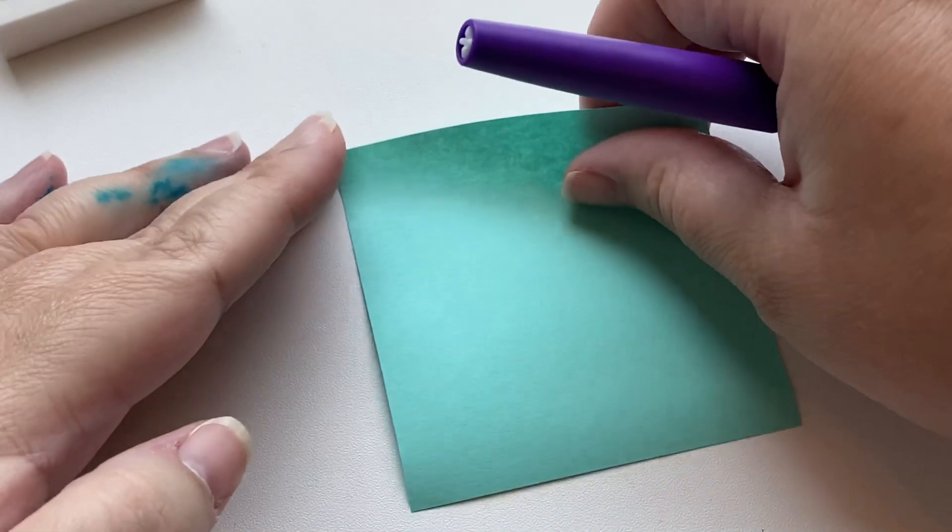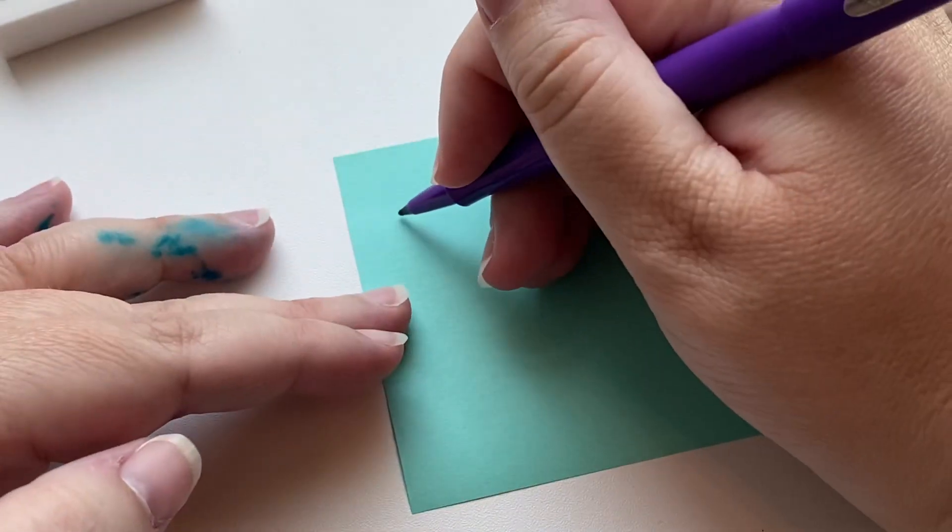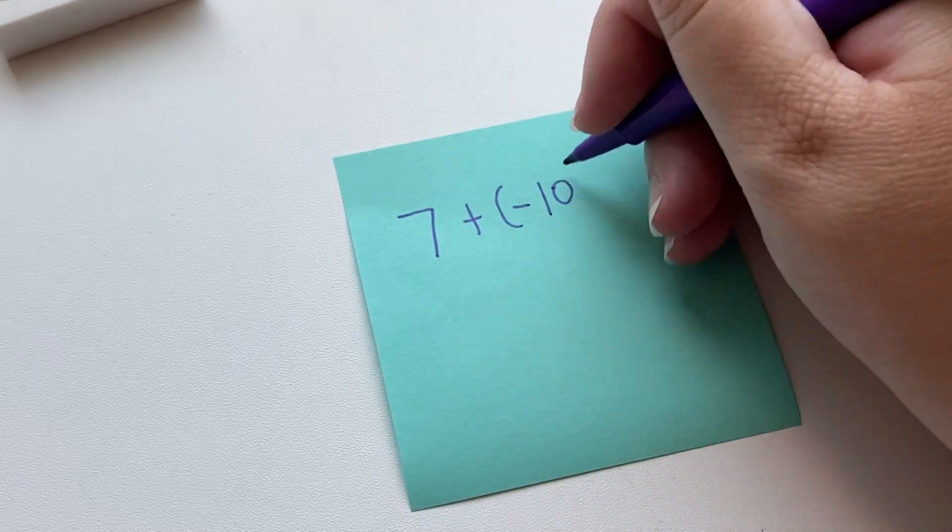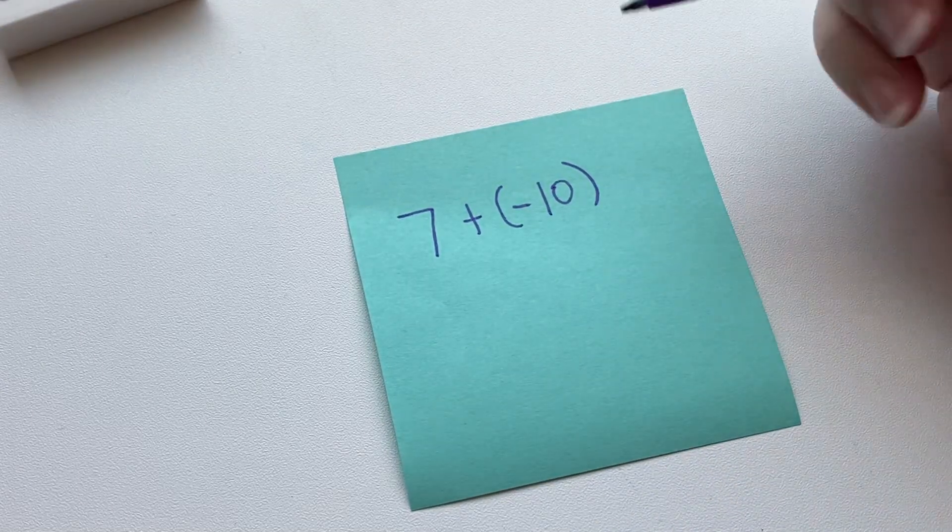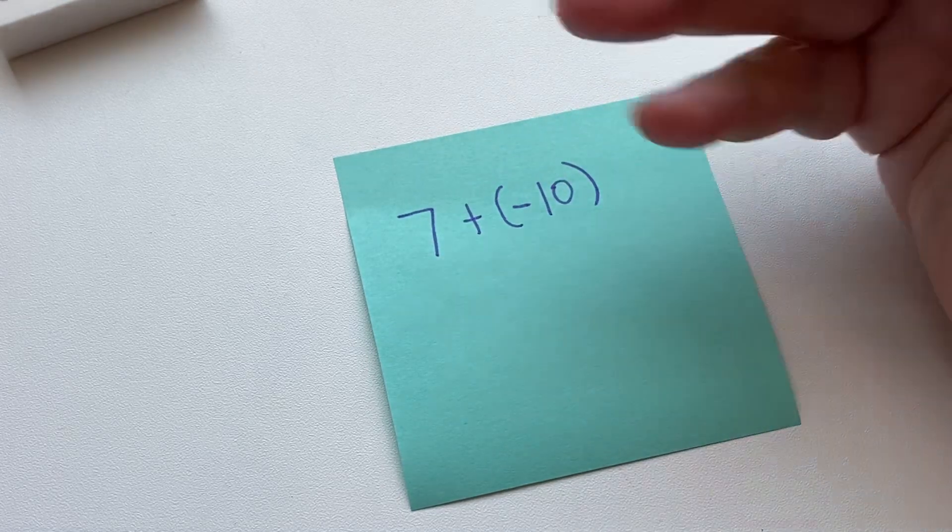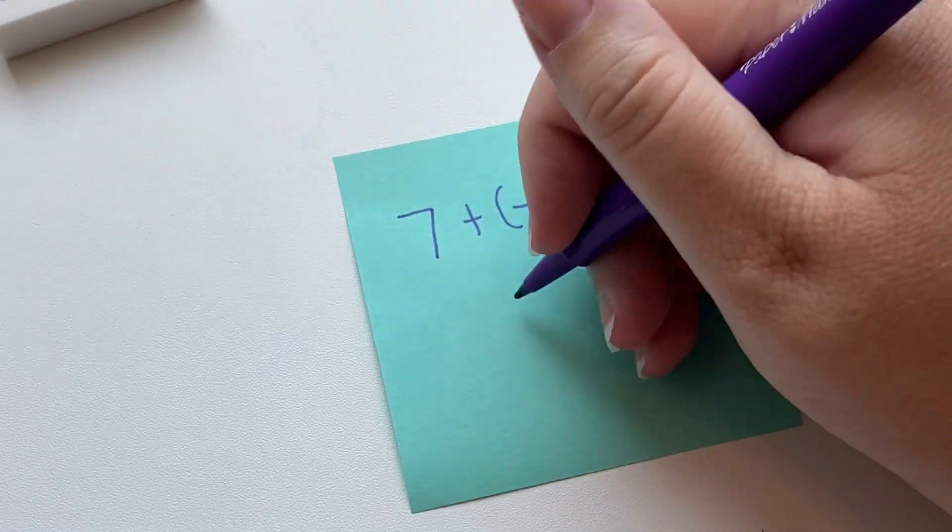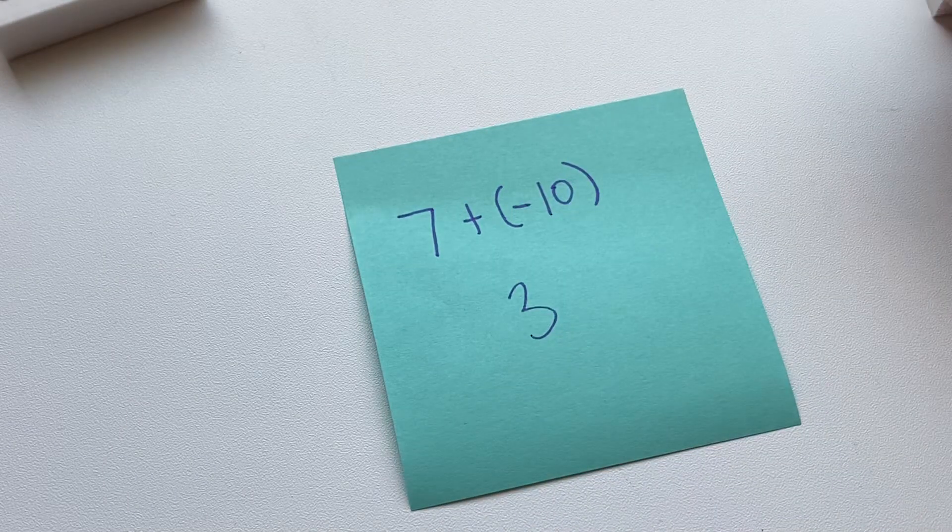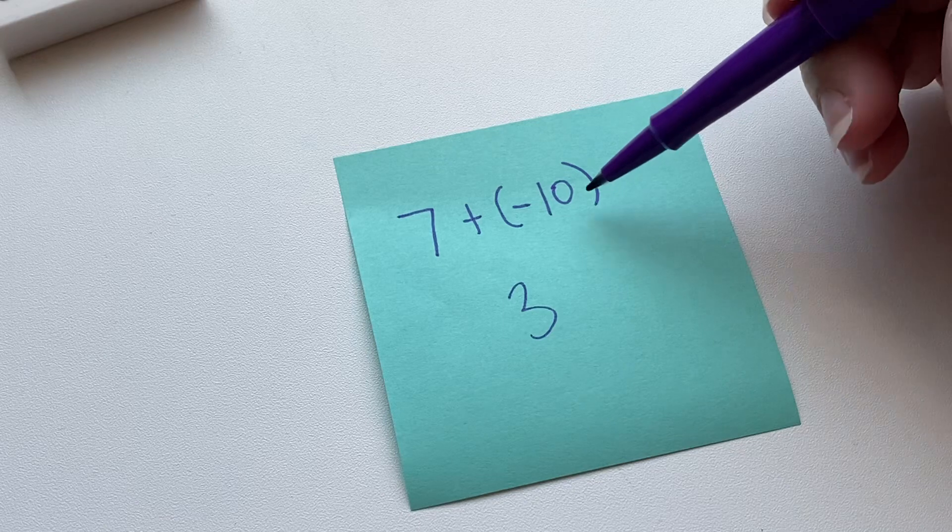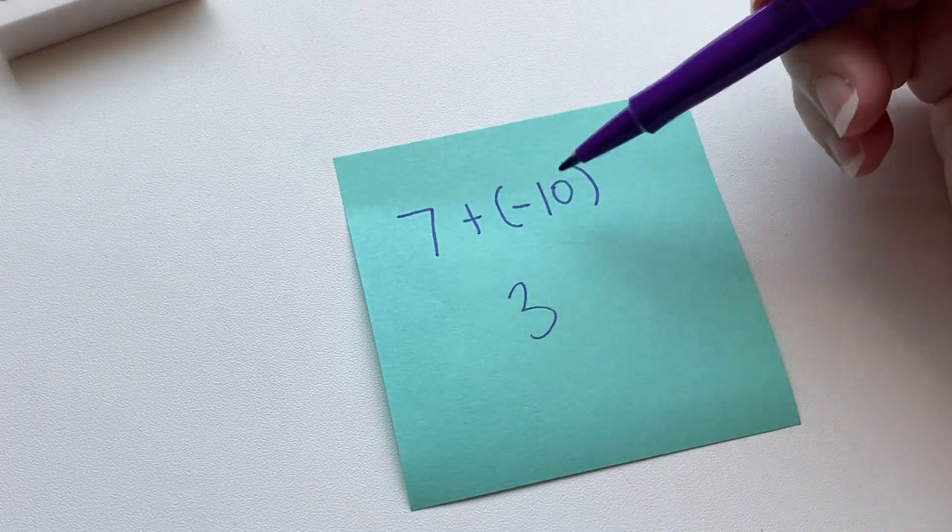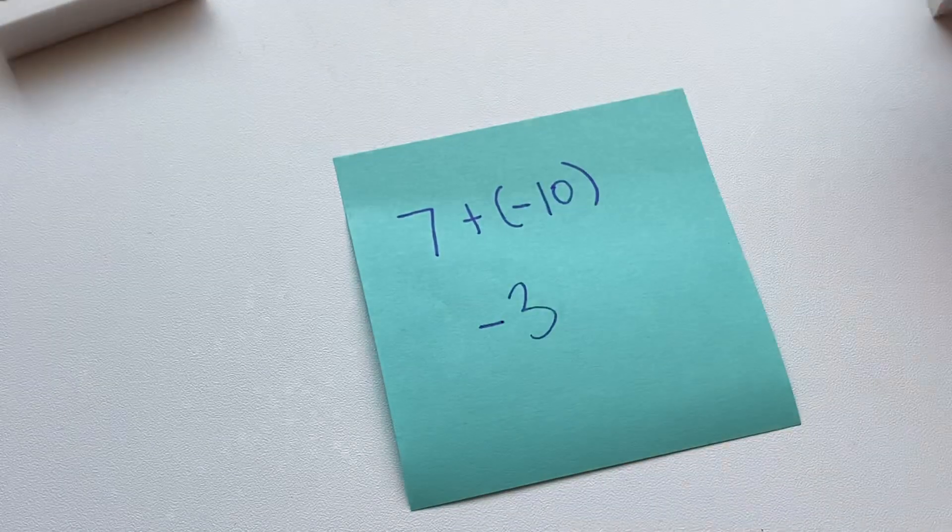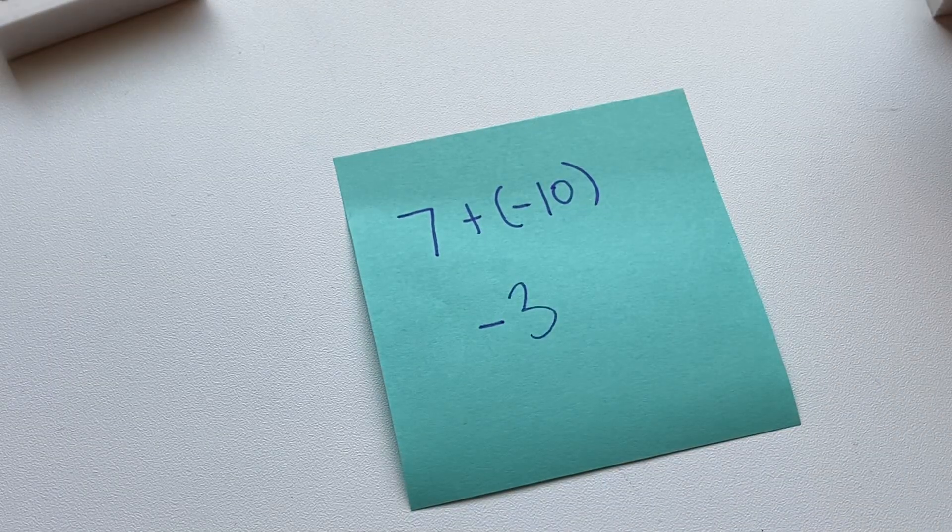The positive number could be first, and it could be 7 + (-10). These have different signs, so we're going to subtract. 10 and 7, when we subtract, we get 3. That's the difference between them. And then keep the sign of the larger digit. 10 is larger than 7, so we'll keep the sign of the 10, which is negative. So when this is simplified, this is -3.